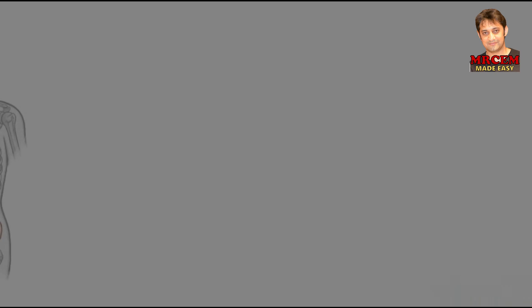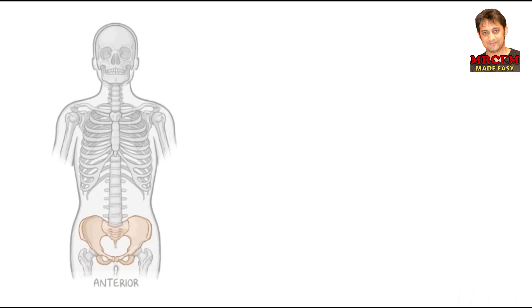The foot bone's connected to the leg bone, the leg bone's connected to the thigh bone. The lower limbs actually have an incredibly detail-rich skeleton that can be divided into two functional components: the pelvic girdle, which connects the lower limb to the axial skeleton, and the bones of the free lower limb.